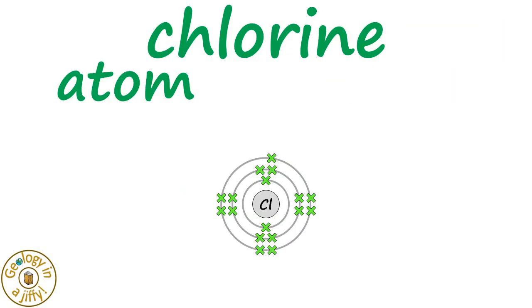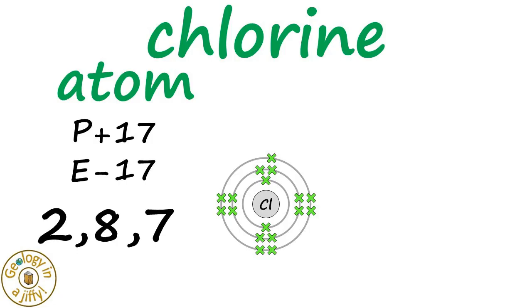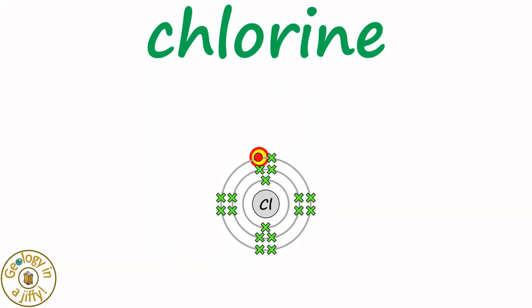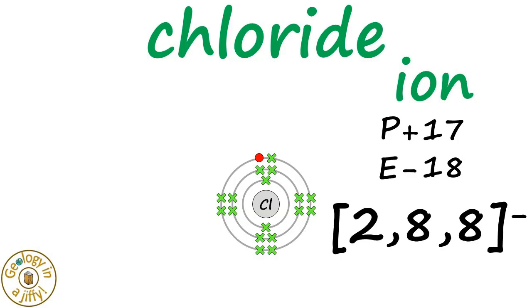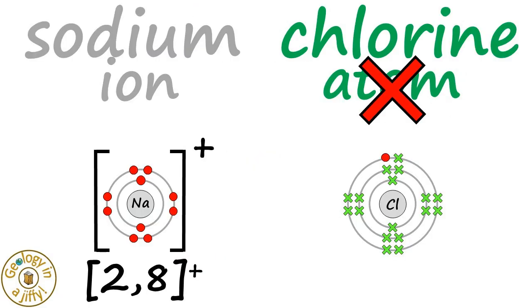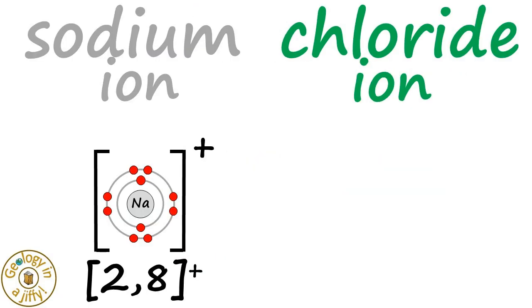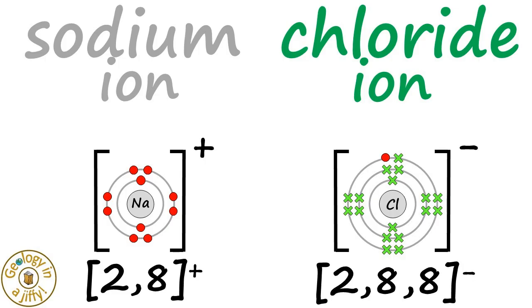The chlorine atom had 17 protons and 17 electrons arranged as 2, 8, 7, with a gap in its outer shell. This gap is filled with the electron from sodium, making this a chloride ion with 17 protons and 18 electrons, giving it a 1 minus charge. We write this as 2, 8, 8 with a minus sign, putting brackets around the ion. The chlorine atom is now a chloride ion with configuration 2, 8, 8 minus.